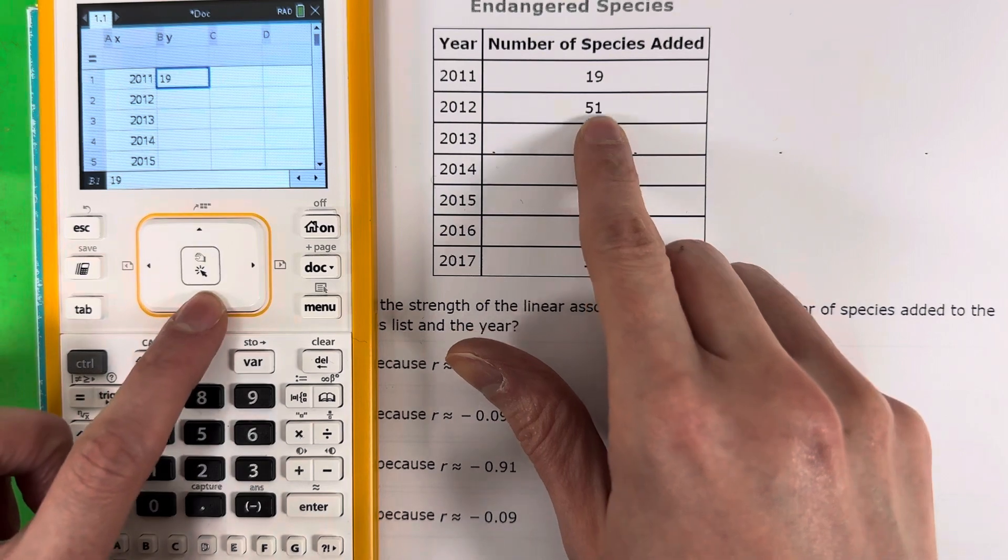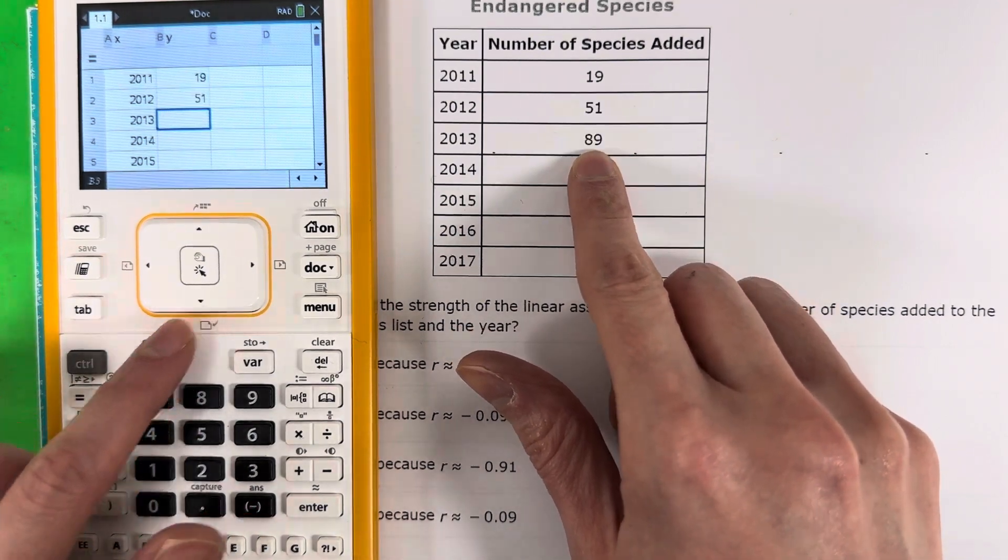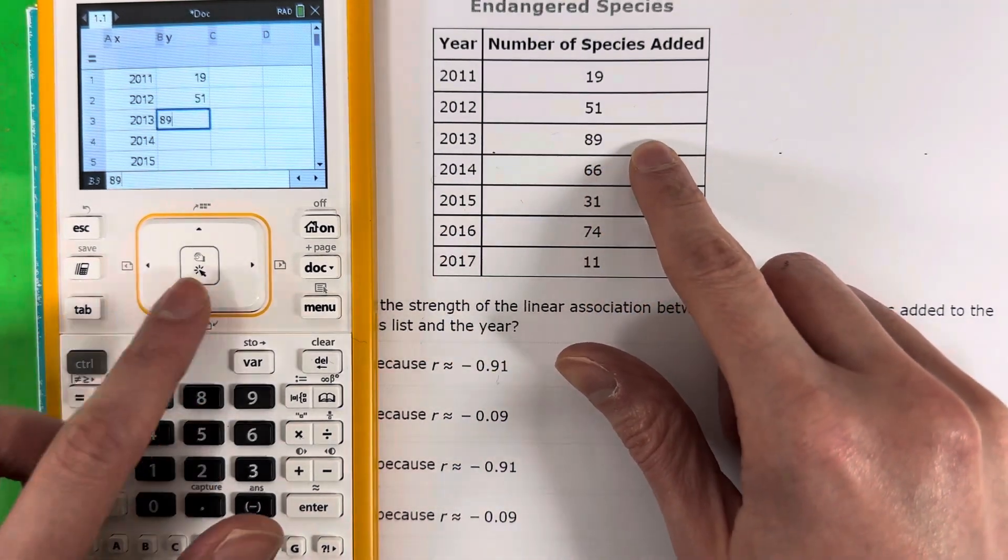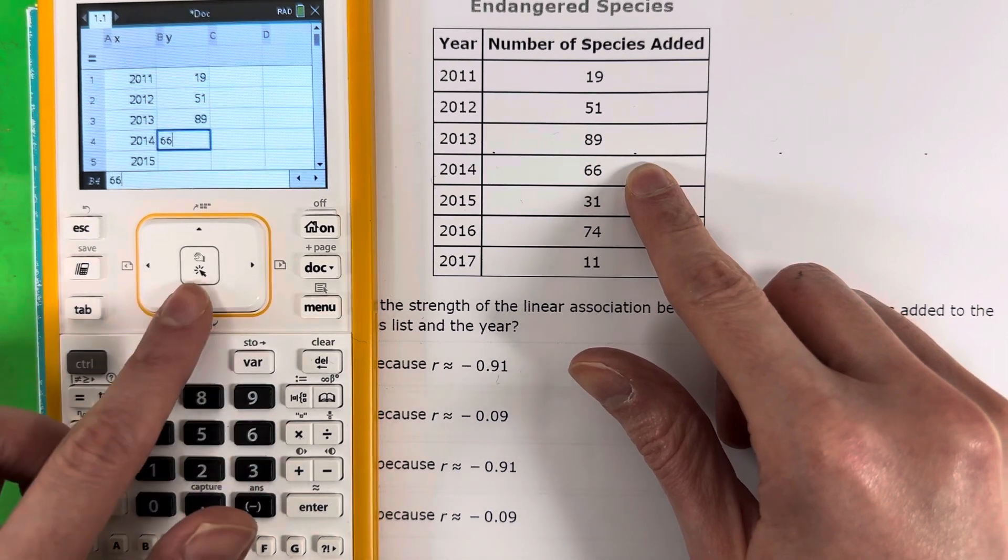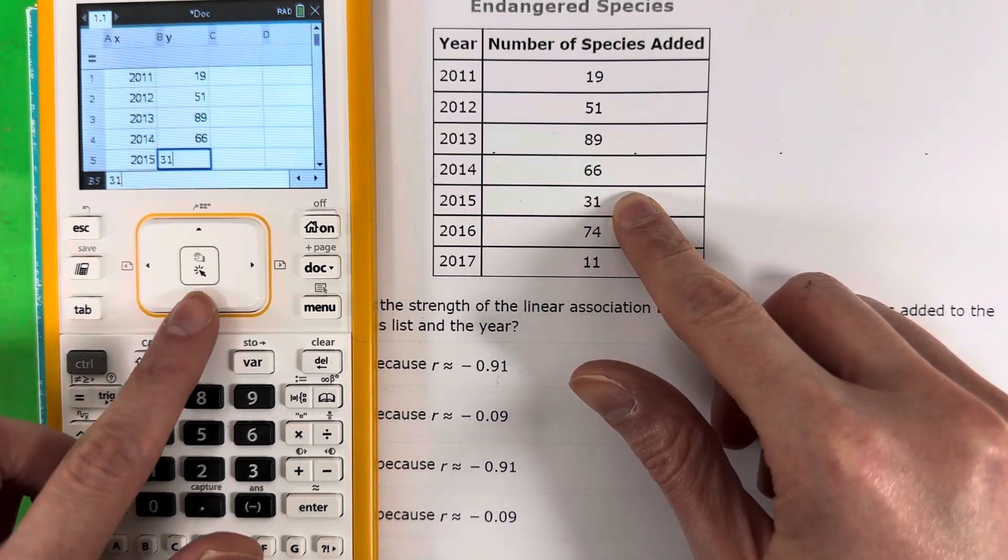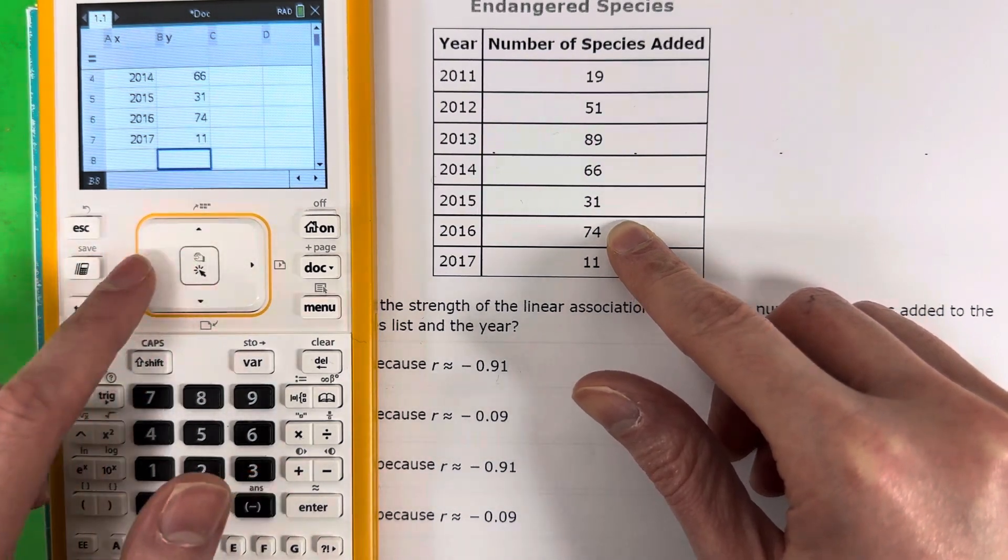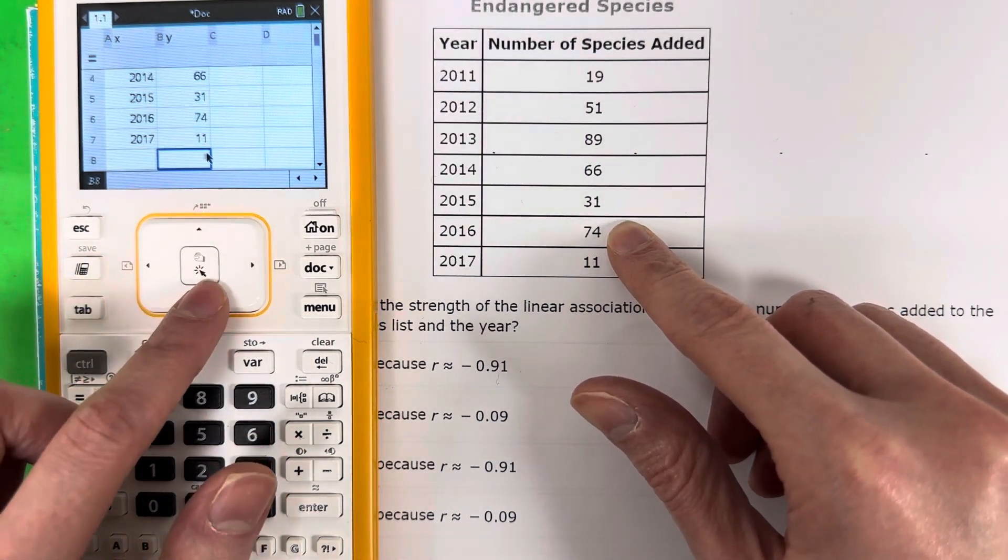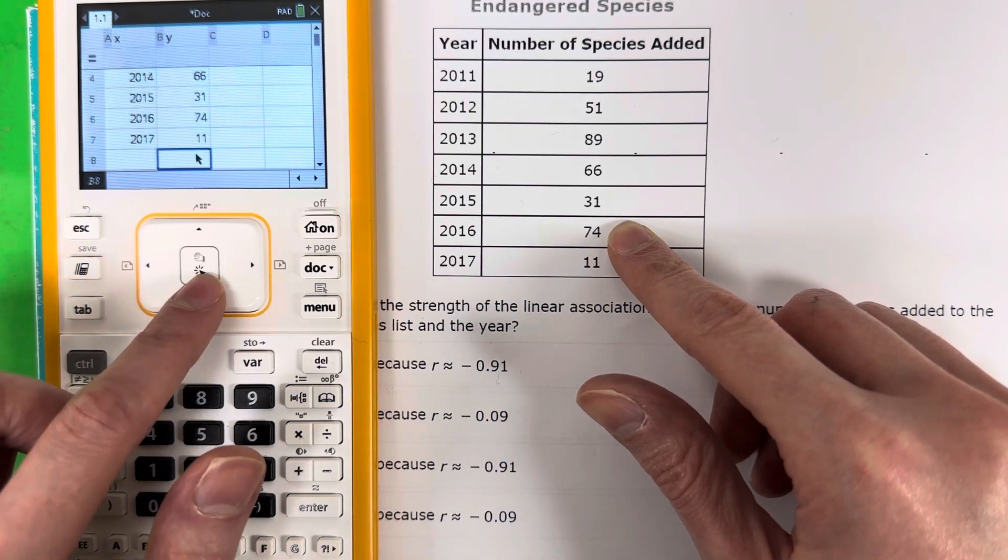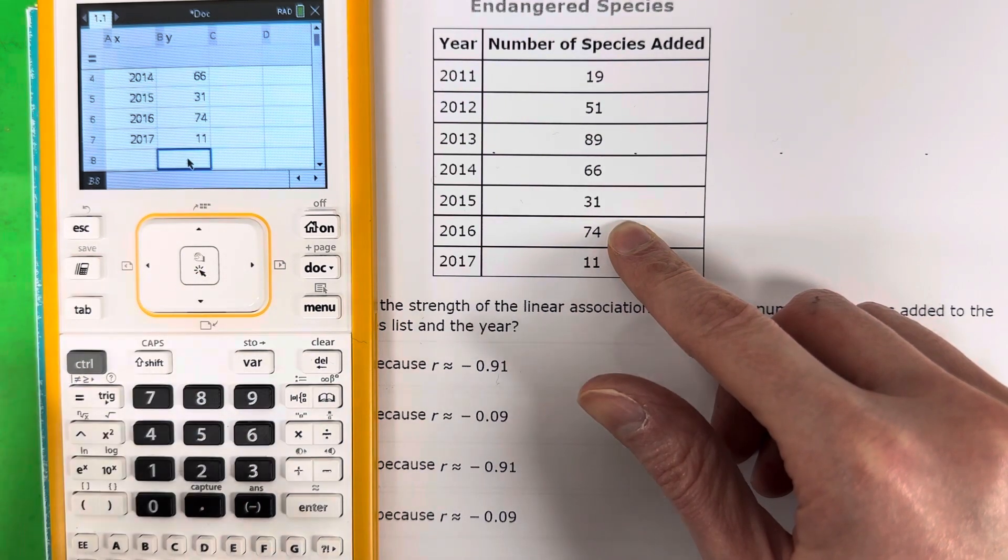Okay, and then put the numbers. Make sure that they are all put in correctly. Okay, double check, make sure everything is correct. Now you need to make sure that this rectangle is right here.